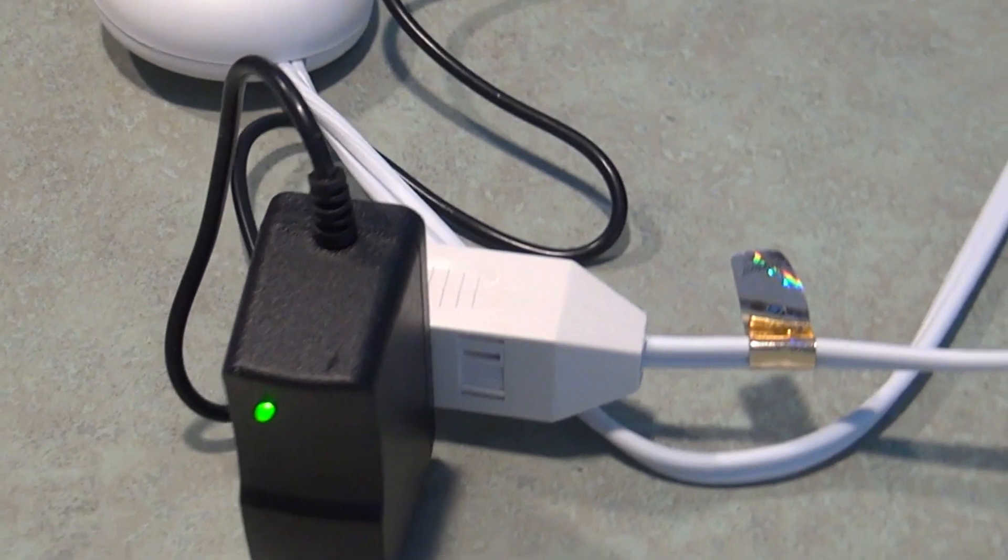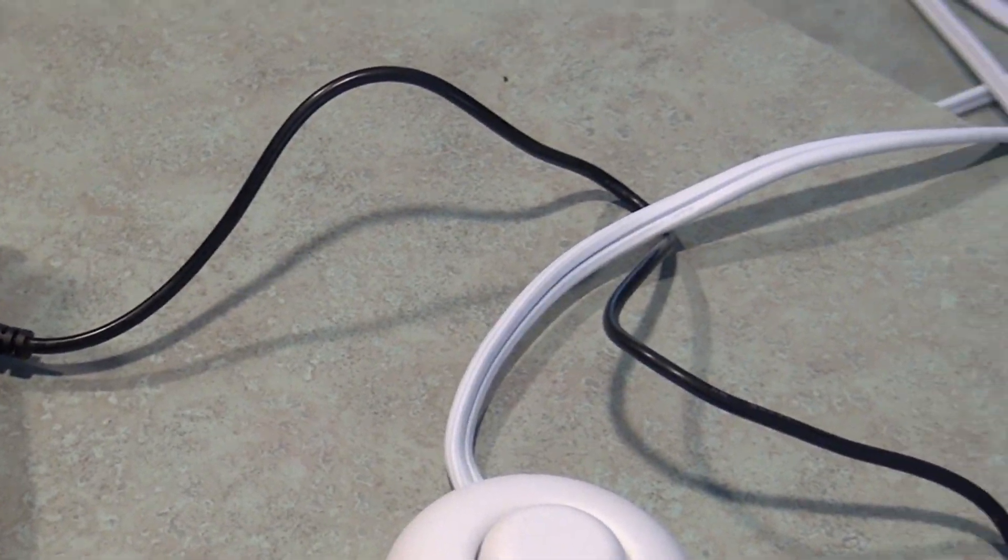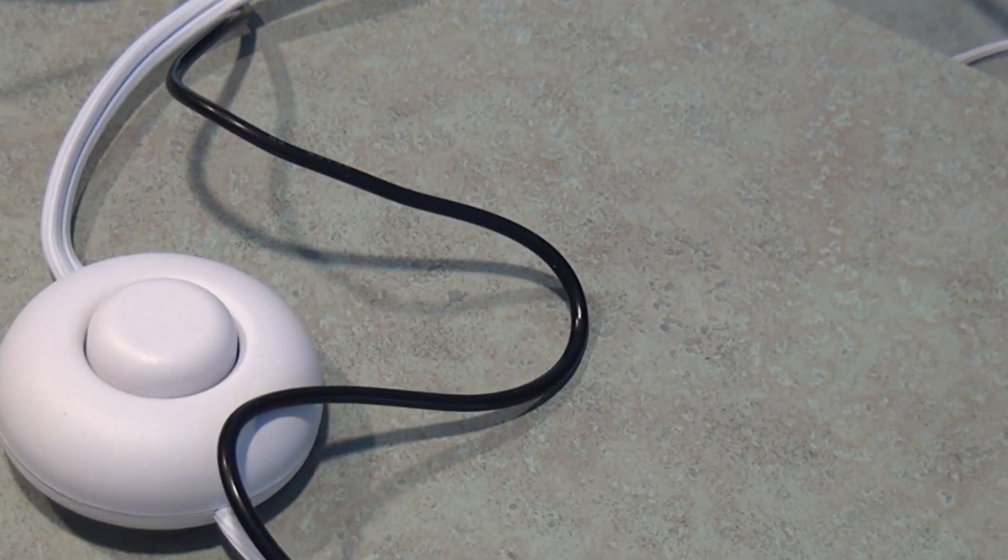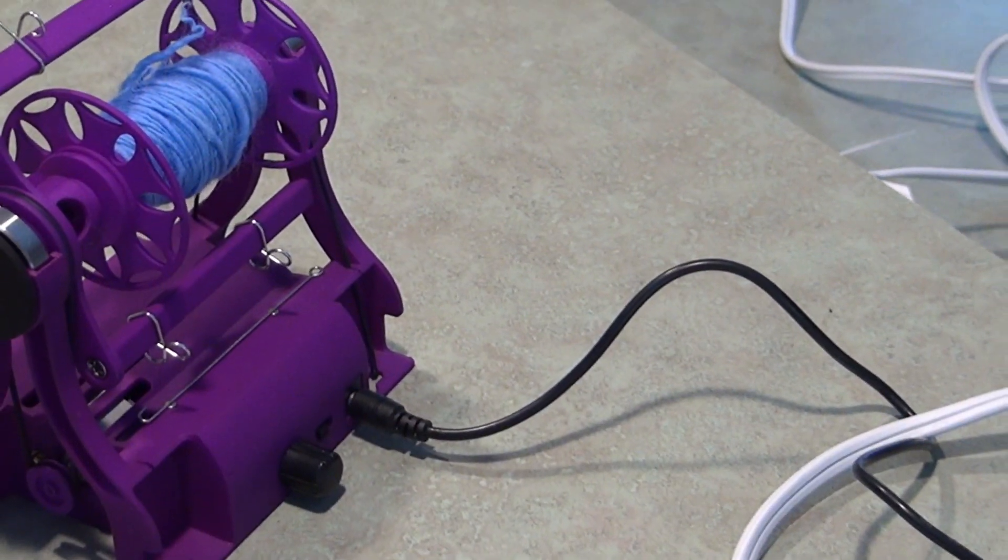If you want to use it with the USB power supply, you'd have to rewire this switch so that it would plug into the Electric Eel Wheel, and then the USB power would plug into the other end. You'd have to cut some wires and rewire things. I can explain how to do that - it wouldn't be too big of a process.